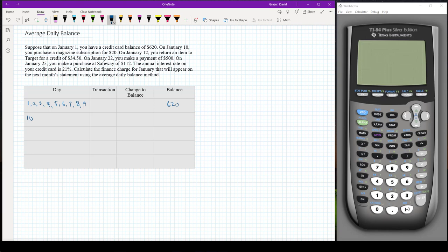Now on January 10th there's a transaction. This transaction is the subscription and it's going to yield a change in balance. It's going to increase my balance by $20 because it's a purchase, so plus 20. That means after that transaction my balance will be $640.